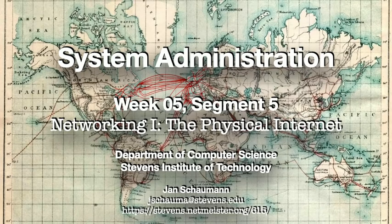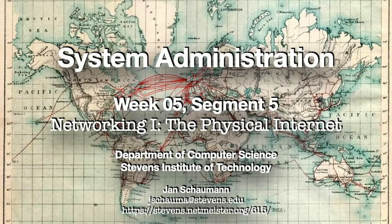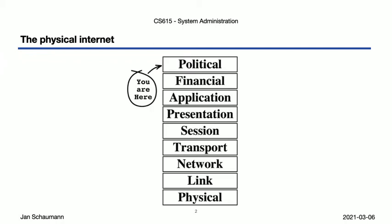Hello, and welcome back to CS615 System Administration. This is week 5, segment 5, and we're going to be talking about a few of the physical aspects of the internet. We saw in the last video that there's a logistical component to the internet, a non-profit governance body for at least some aspects of it, and a geographical division with certain IP spaces allocated to specific geographical regions. Having moved on from the abstract structure of IP packets to how addresses are allocated, let's now take a look at just how packets flow.